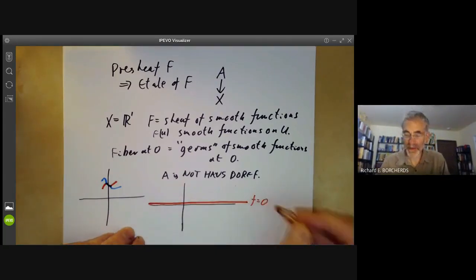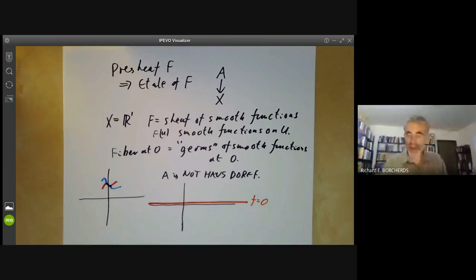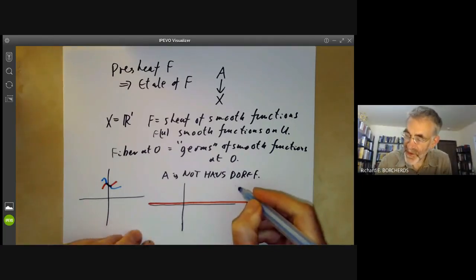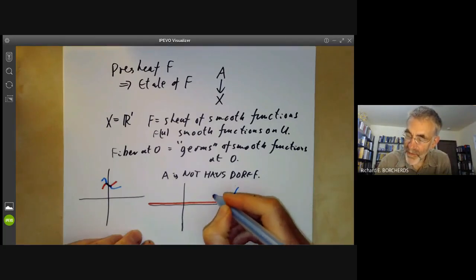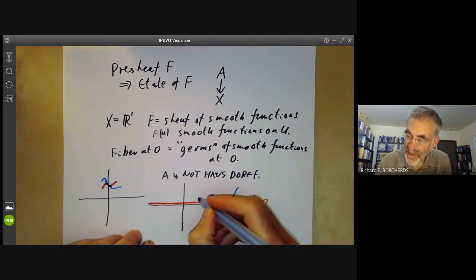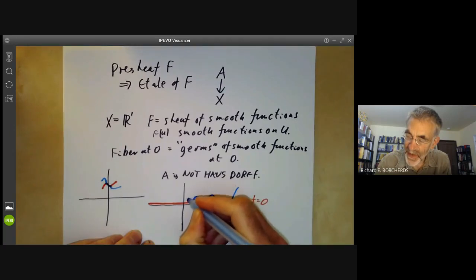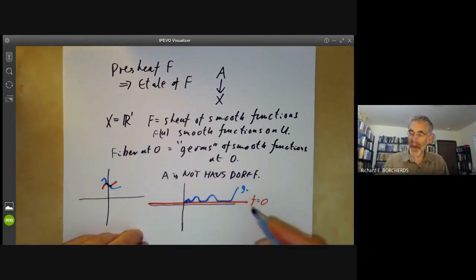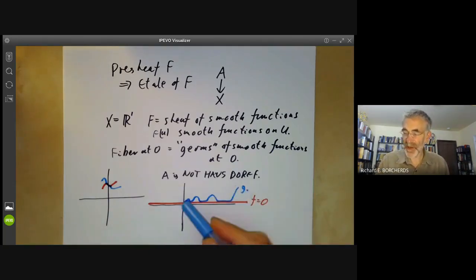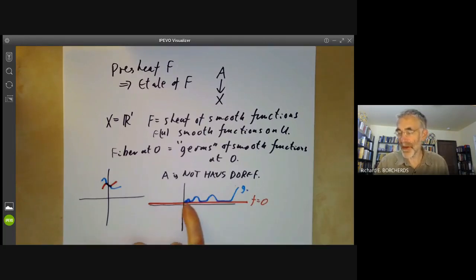The first point at zero I'm going to take to be the fibre of zero, so f is just equal to zero. The second point at zero is the following function: it comes down, is zero there, then has a bump, then is zero, then a bump, and zero, and a bump, and so on. This is g. Notice that f and g are different points in the fibre at zero, because there's no open neighbourhood where they're the same — these bumps go on forever.